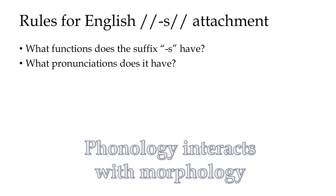A classic example in English is this S. S does a couple of different things: we can make it a plural if it attaches to a noun — 'cat,' 'cats.' It can also be third person singular present tense if I attach it to a verb — 'walk,' 'walks,' 'run,' 'runs.'